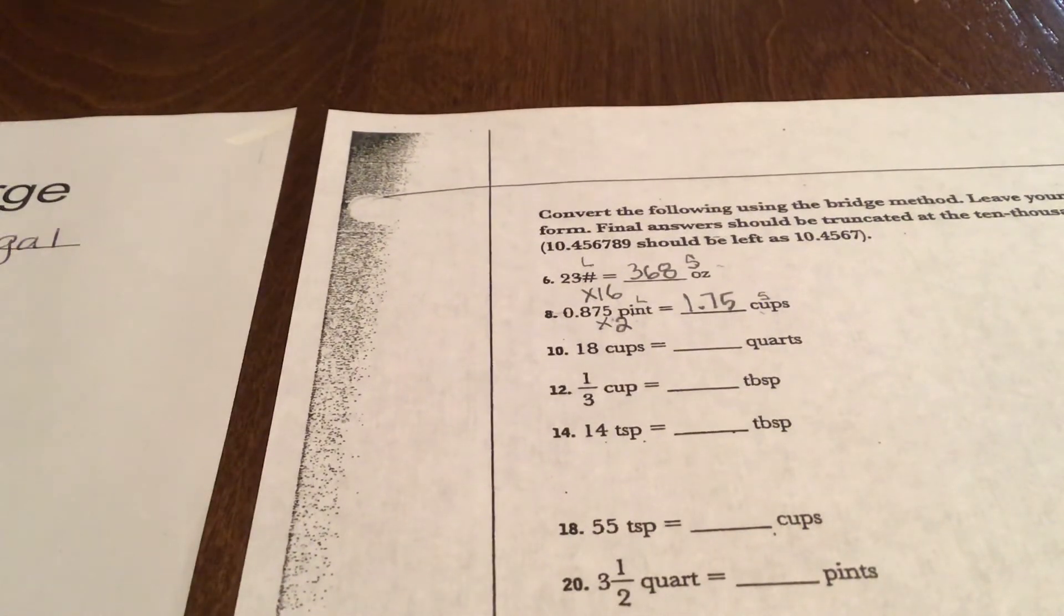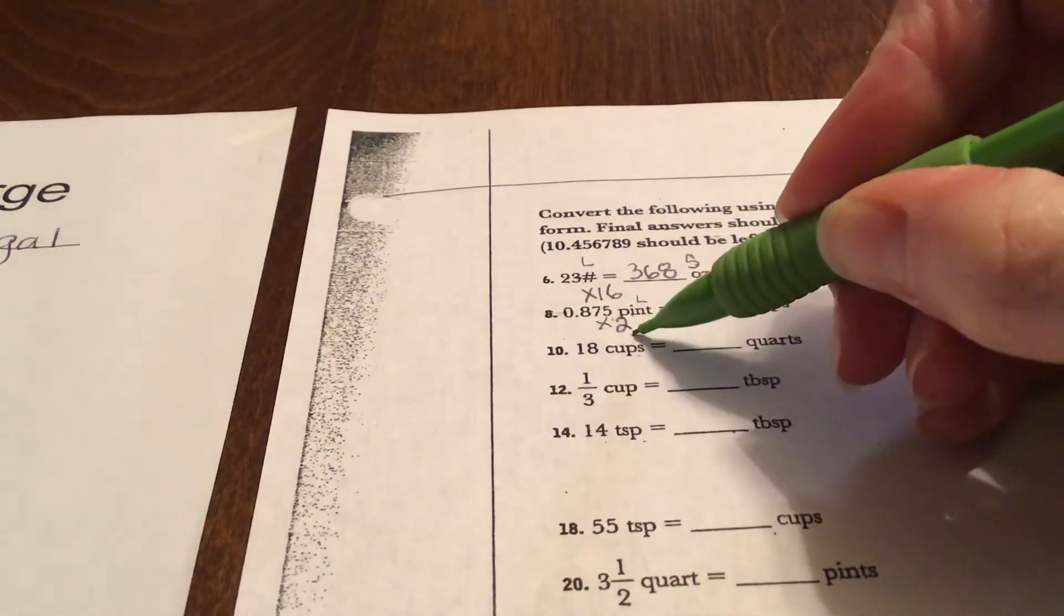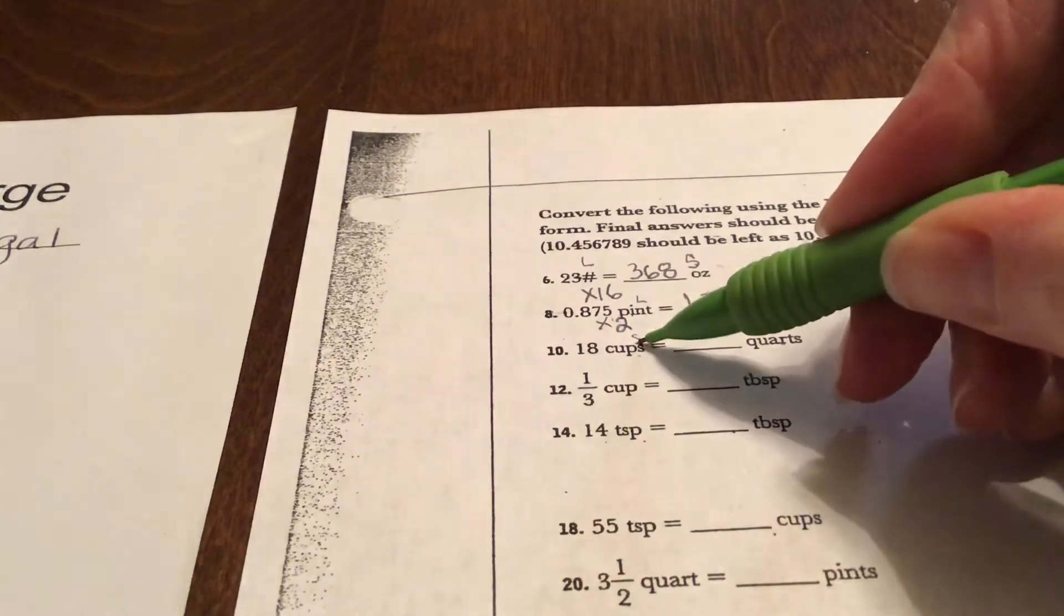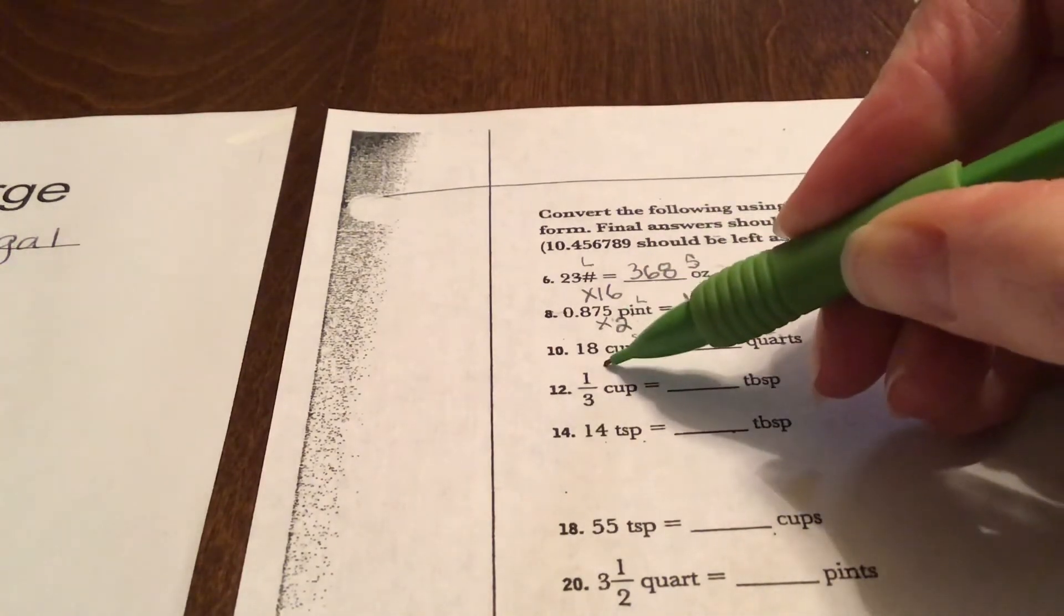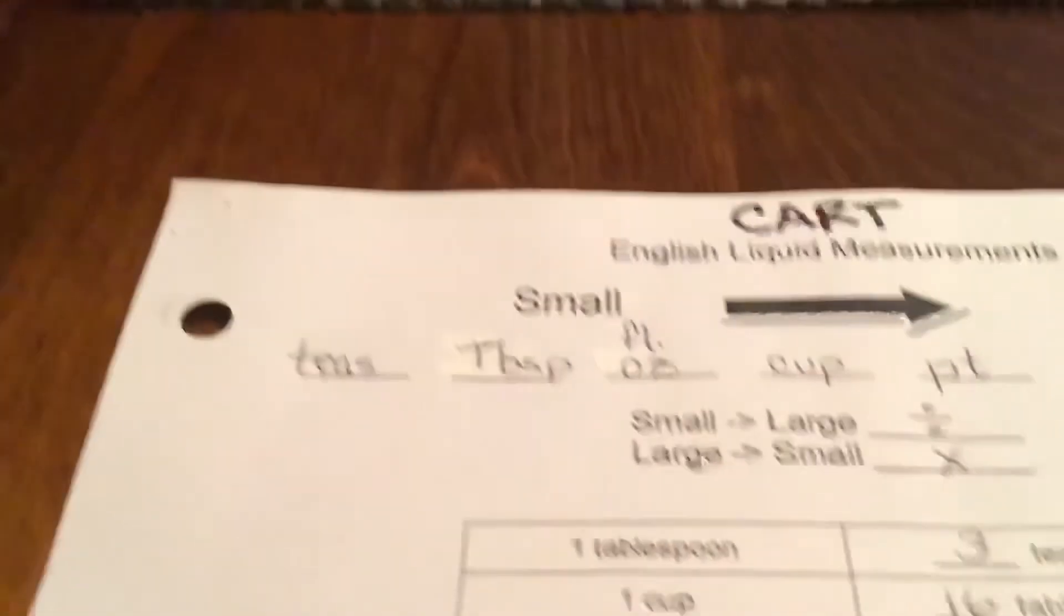Cups are smaller than quarts, so I'm going to put a little S and a little L. And that's gonna make me see that I'm going from a small unit to a larger unit, which means I'm going to divide.